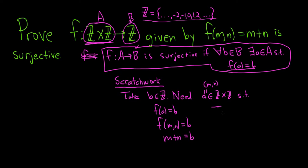So I'm thinking, maybe this will work. We can take m equals 2b, which is an integer, because b is an integer. And n equals negative b, which is an integer, because b is an integer. And then if we do m plus n, we get 2b plus negative b, which is b, so it should work. So that's the idea, that's how we figure it out.